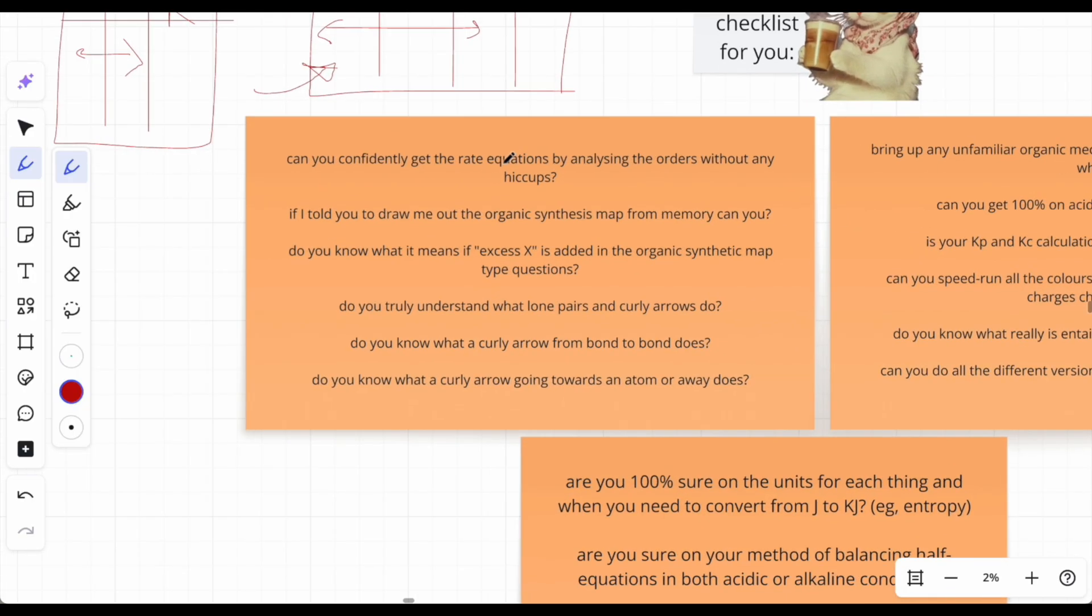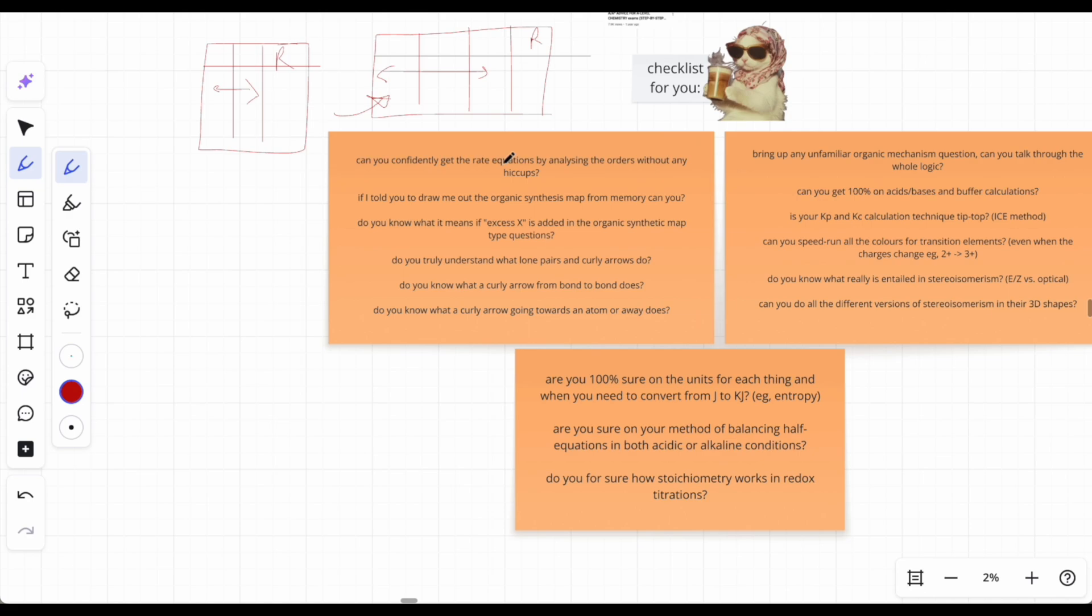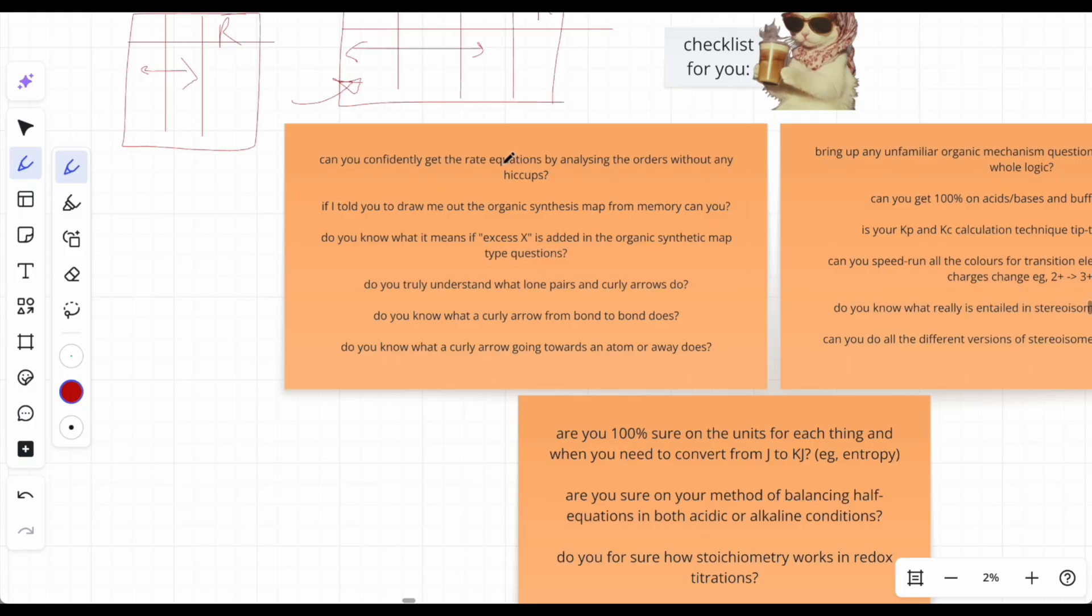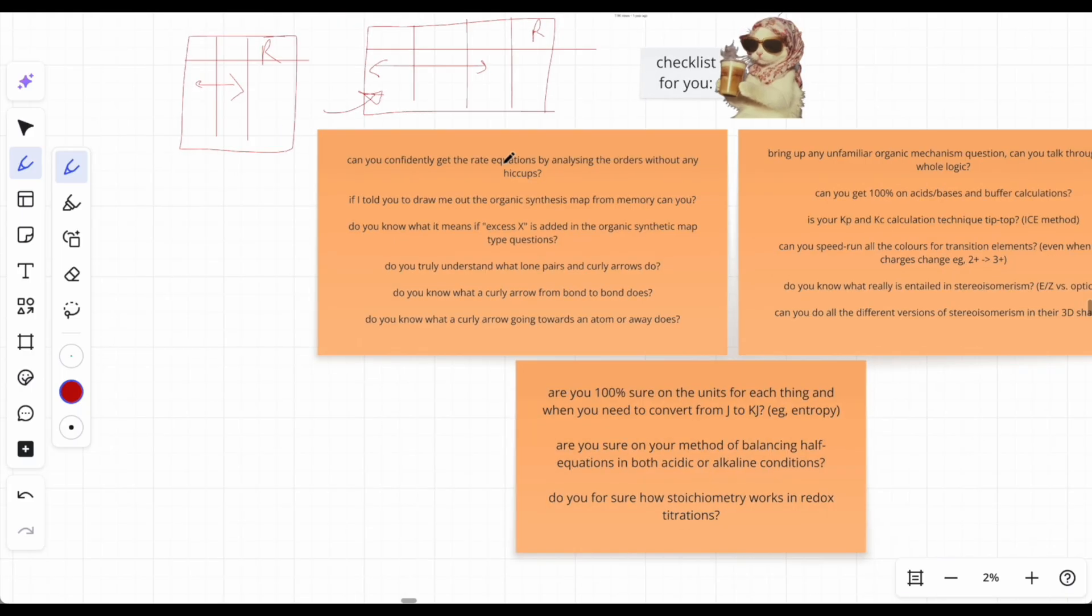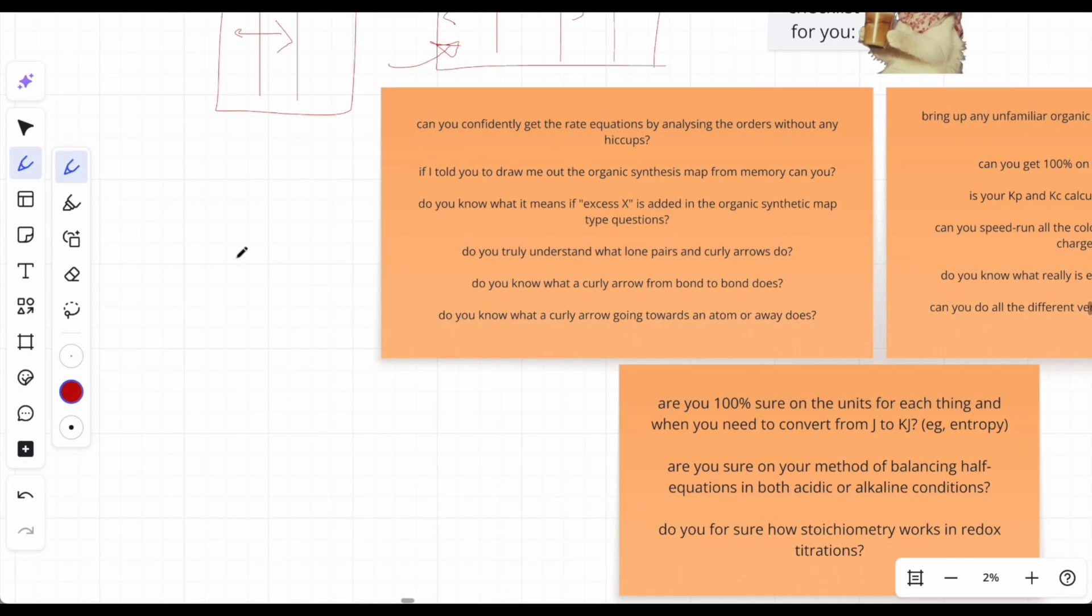If I told you to draw out the organic synthesis map from memory, can you? If your friend asked how do you go from an acyl chloride to an amide, you should tell me instantly. I used a whiteboard platform for my revision. You can upload it to GoodNotes or use Anki - put boxes over the reagents and catalysts, then take them away once you get it. It's just repetition. My friends and I would test each other every single day like a starter to our day.